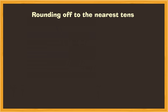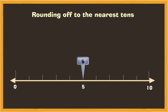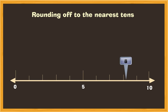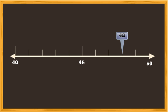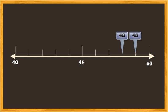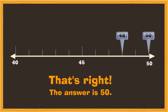We can round off to the nearest tens too. If the digit in the ones place is five or more, we round off to the greater number. If the digit in the ones place is less than five, we round off to the smaller number. Now, can you round off 48 to the nearest tens? That's right. The answer is 50.